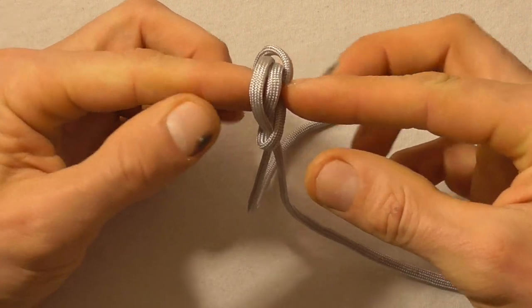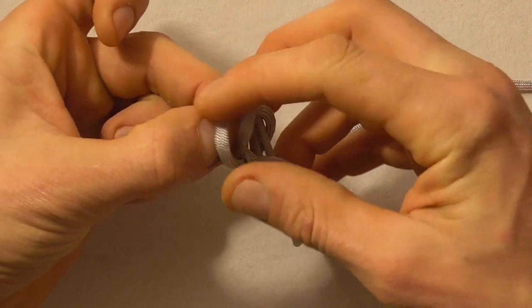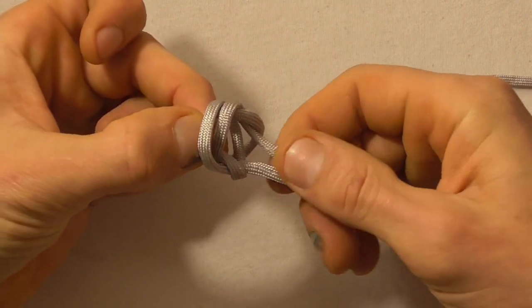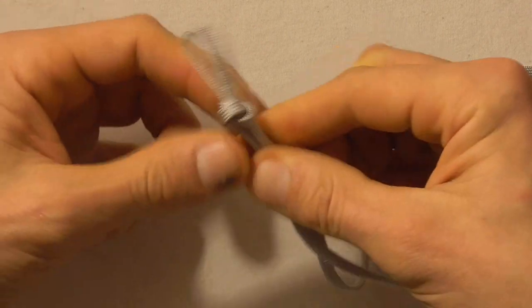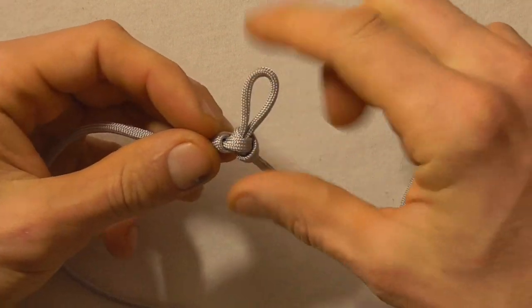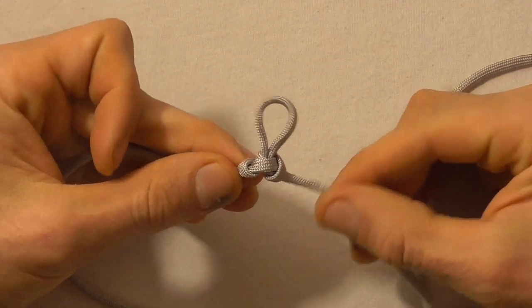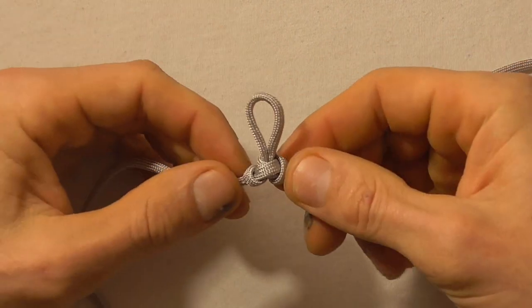So I'm going to pull this one out and I'm going to push this one through, grab that loop and then pull. You should get the alpine butterfly. And this loop size here should be about one centimeter so you might have to adjust it depending on how big you made it.